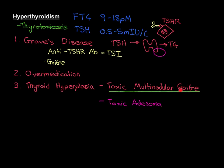So those are two examples of thyroid hyperplasia — toxic multinodular goitre, which is more common than toxic adenoma, but be aware that toxic adenomas do occur as well. The final cause I'm going to talk about is thyroiditis — inflammation of the thyroid gland.